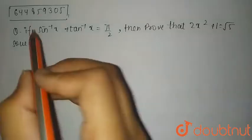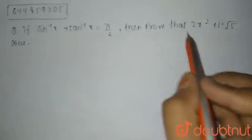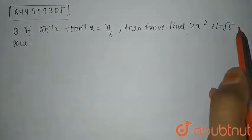Hello students. So today's question is, if sin inverse x plus tan inverse x equals pi by 2, then prove that 2x square plus 1 equals root 5.